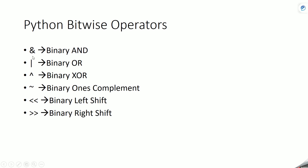In Python we have these many bitwise operators, also called binary operators. They perform operations on bits, that's why they are called bitwise or binary operators. Let's see each of them with an example.